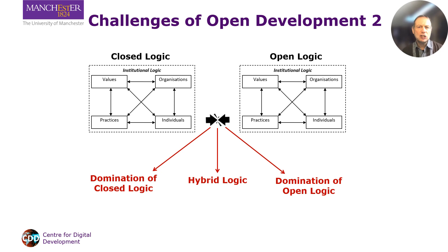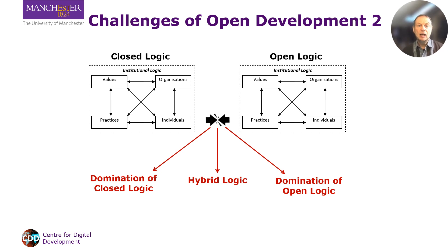Finally, there can be a clash of institutional logics, which are defined as values and practices of networks of individuals and organizations that shape meaning and behavior. Open development initiatives will tend to stir up conflicts between networks of open logic that they introduce and networks of closed logic that already exist. For instance, in South Africa a university team sought to introduce open source, open innovation software to help pharmacies dispense medicine to those with AIDS. Universities are traditionally places of closed logic — closed access to education unless you meet admissions requirements and pay high fees, closed educational resources that lecturers don't share, closed innovations that are patented by the university. So this clashed with the team's open logic, which believed in freedom of access, ownership, participation, and collaboration.